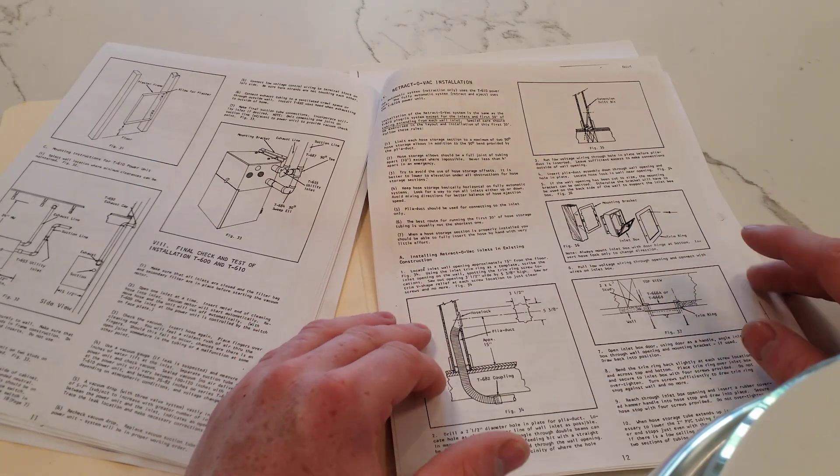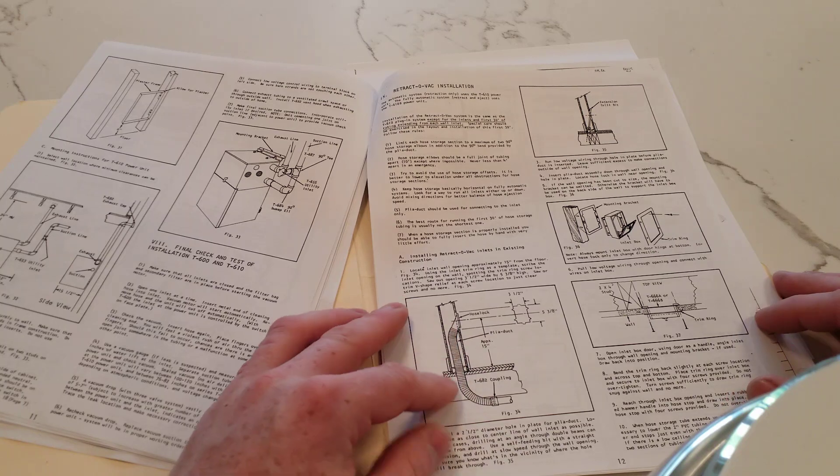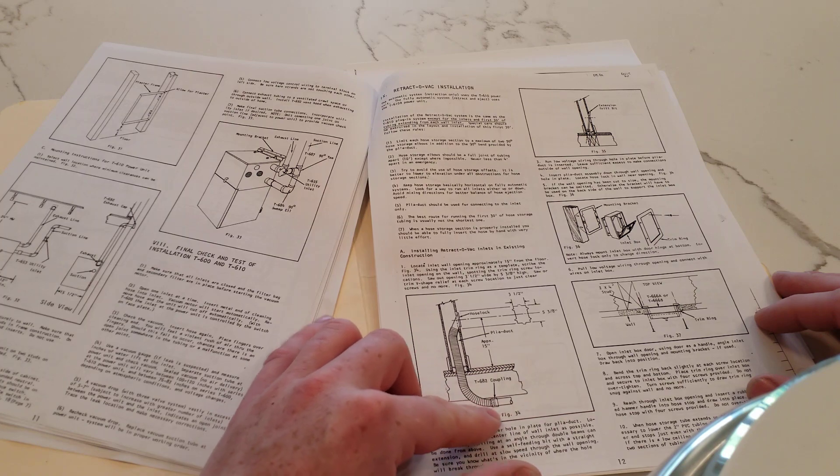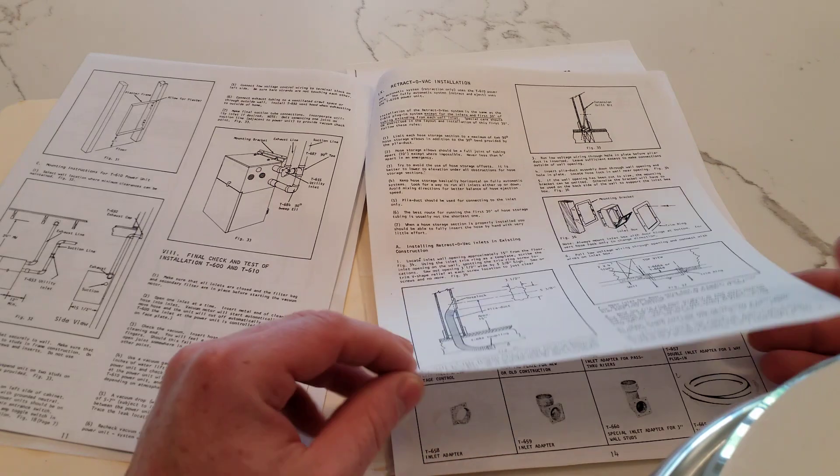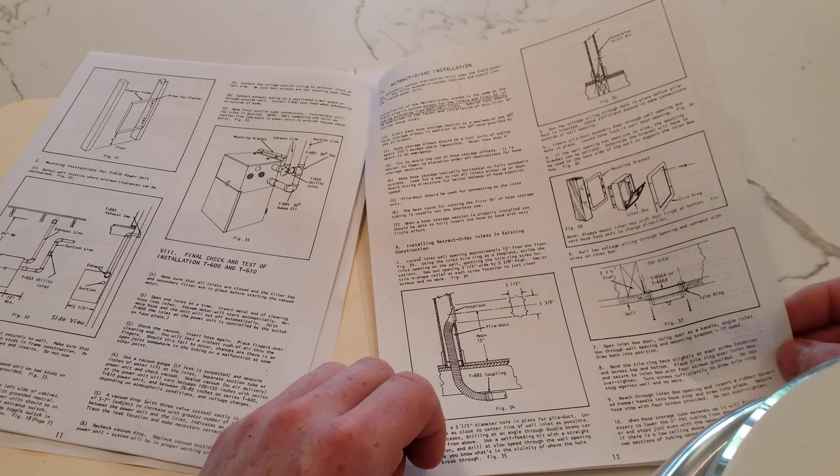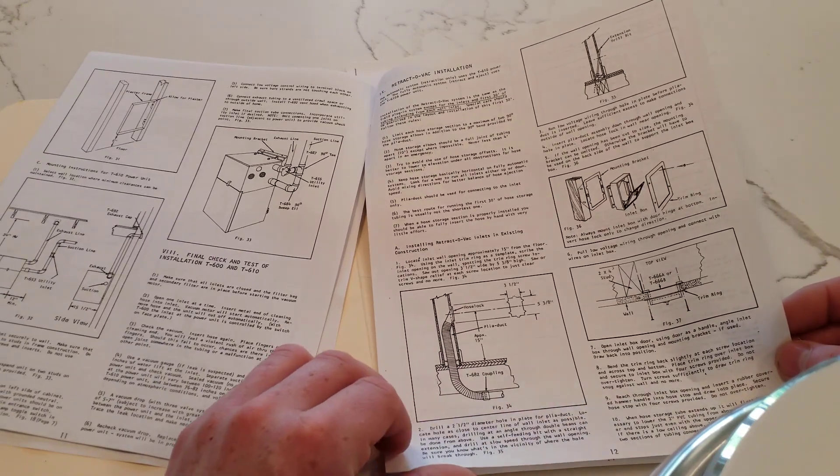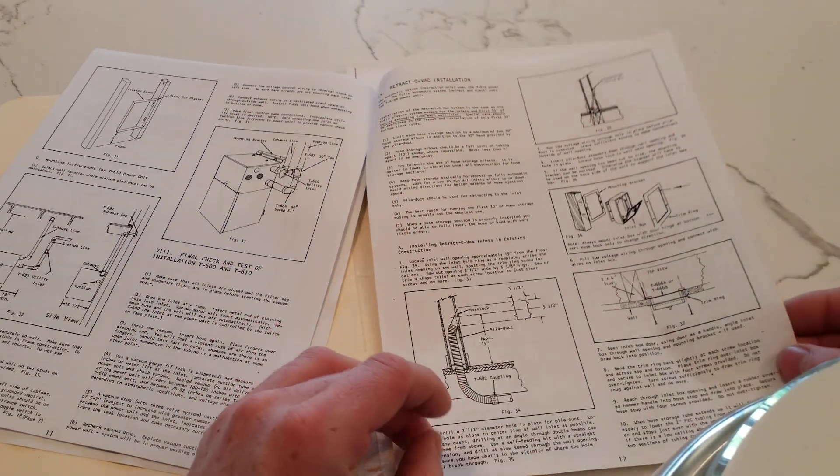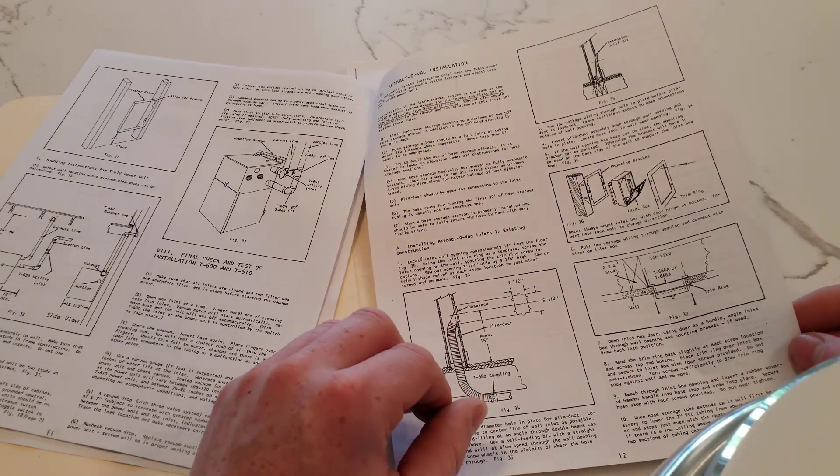Starting here, we have the retract-o-vac installation. One thing that's interesting is they used a section of flex hose from the inlet down through the wall and forming the first 90 degree elbow. They called that playa duct. And you can see how you'd rough in the thing here, how you would drill down. And they're showing you drilling down from above, which is not standard retrofit procedure.